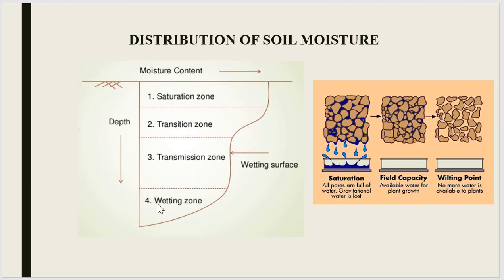The fourth zone is the wetting zone, which has an even lesser amount of water compared to the transmission zone. The moisture content here will be at or near field capacity. Comparing all four layers, the wetting zone has the least amount of water relative to the first saturation zone.